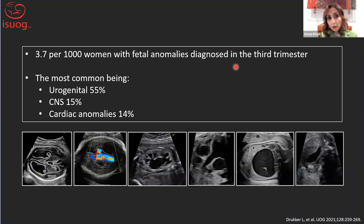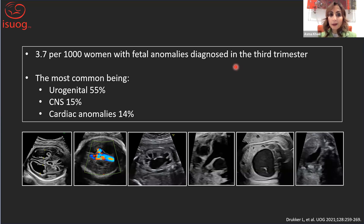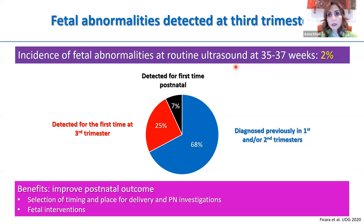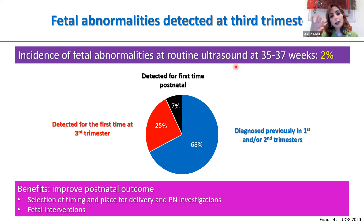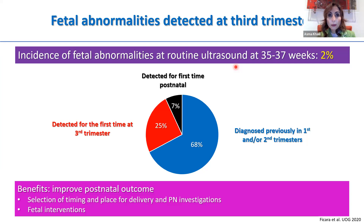How common are fetal anomalies detected in the third trimester? About 4 per thousand pregnancies will have fetal anomalies diagnosed in the third trimester. The most common are urogenital — more than half — followed by CNS at about 15% and cardiac at about 15%. In one screening study with routine third trimester ultrasound at 35 to 37 weeks, fetal abnormalities occurred in about 2%, of which 70% had been detected earlier, a quarter were detected for the first time in the third trimester, and about 7% were detected postnatally.